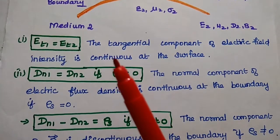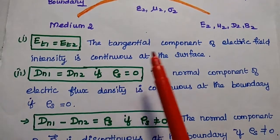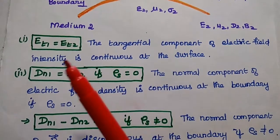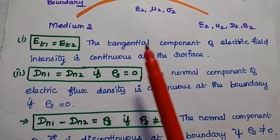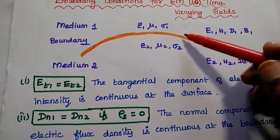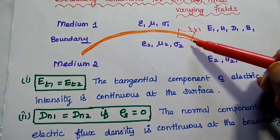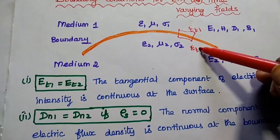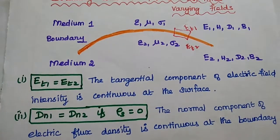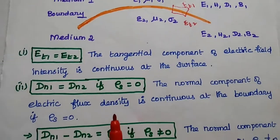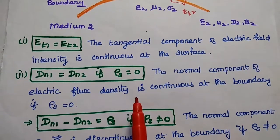The first boundary condition is for the electric field. We consider the tangential component — the tangential component of the electric field is continuous at the surface. At this boundary, the tangential component of medium 1 is equal to the tangential component of medium 2. So the tangential component of electric field intensity is continuous at the surface.